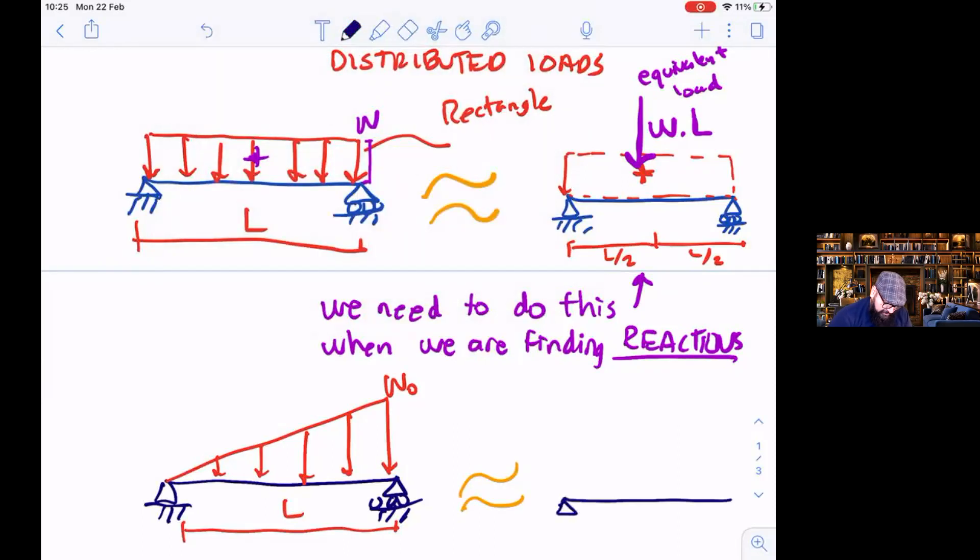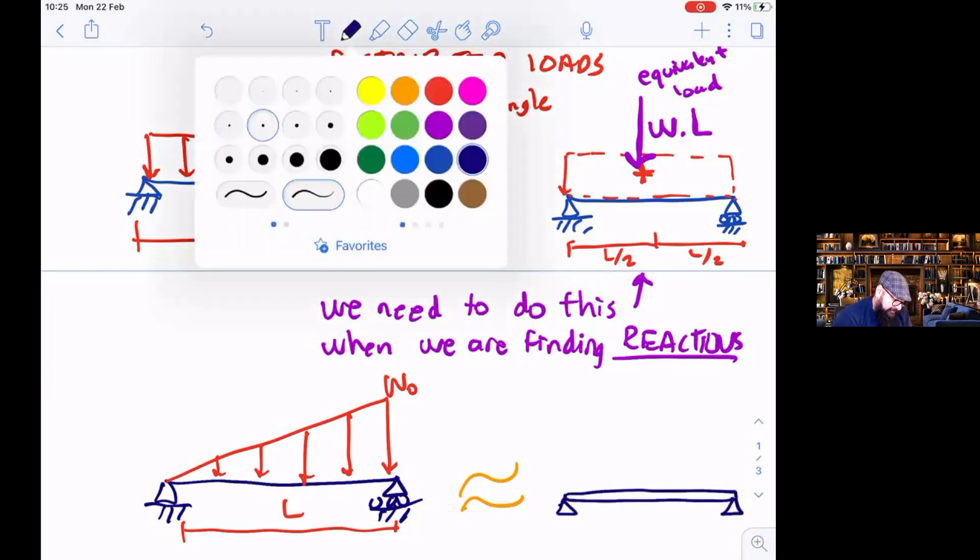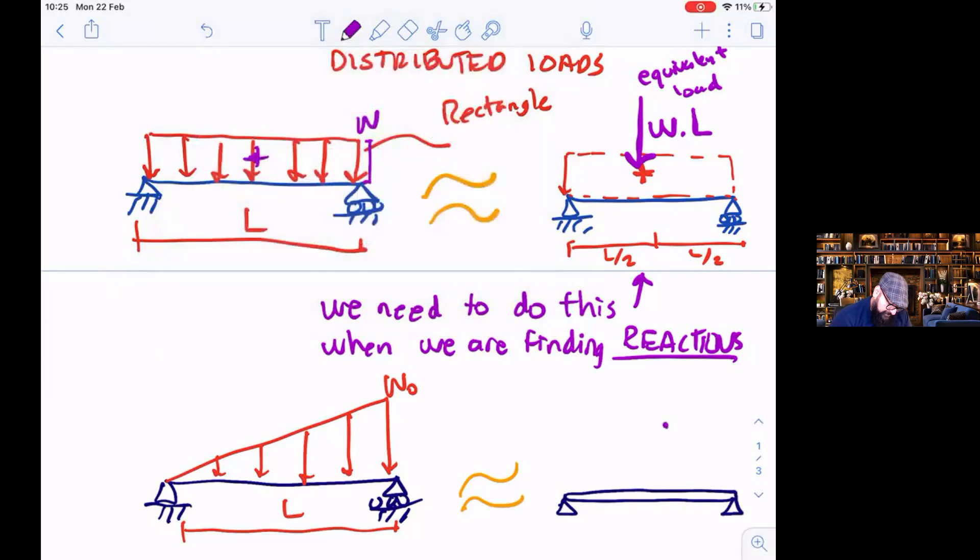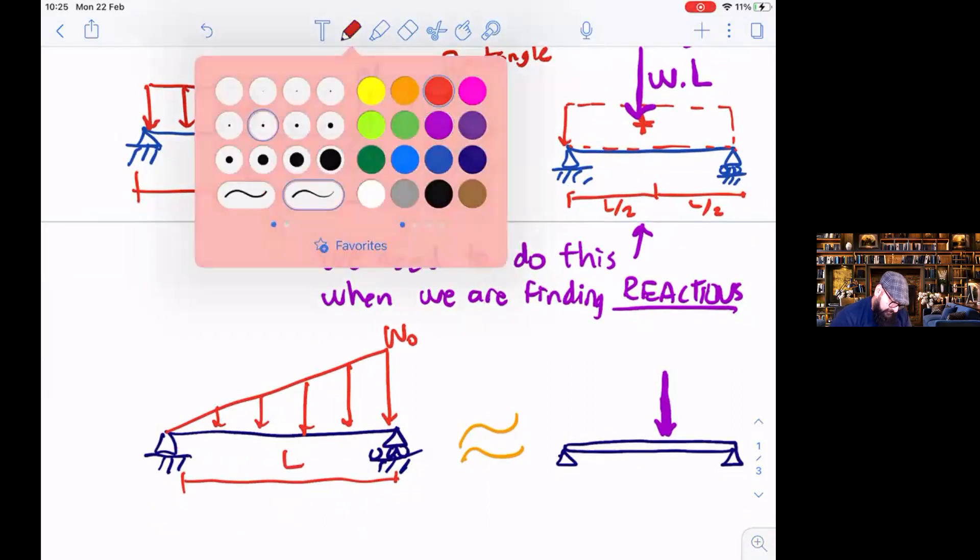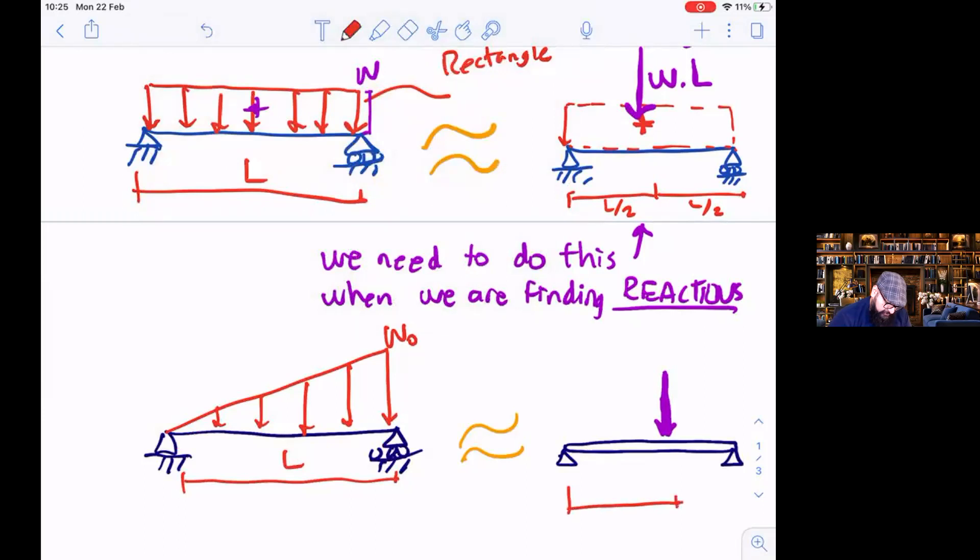The centroid of a triangle, it is well known that it is, or you can demonstrate that it is, but I'm not going to do it now. It's located like this. It is at one third, or two thirds from this side, 2L divided by 3.